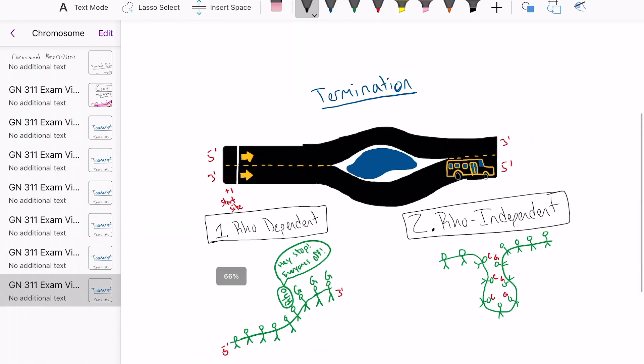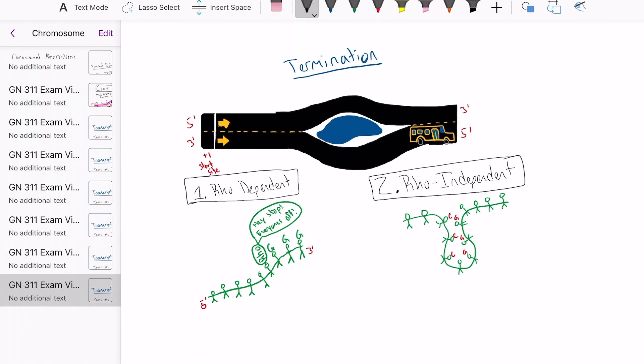Once all the children have been dropped off at their respective houses, we have the last section of transcription called termination. There are two types of termination, the first being rho-dependent and the second being rho-independent.